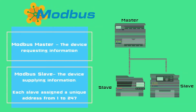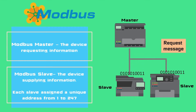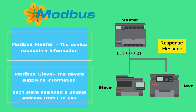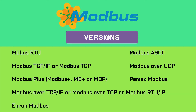The device requesting the information is called the Modbus master and the devices supplying information are Modbus slaves. Each slave is assigned a unique slave address which could be from 1 to 247. In addition to requesting information from slaves, the master can also write information to the slaves. Modbus is typically used to transmit signals from instrumentation and control devices to the main controller or data gathering systems like PLC, DCS, or SCADA. Multiple versions of Modbus protocols have evolved with changing technological requirements.